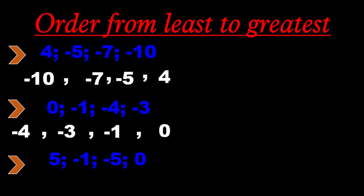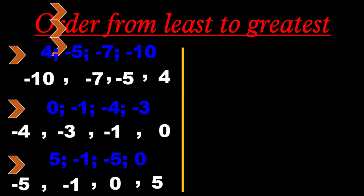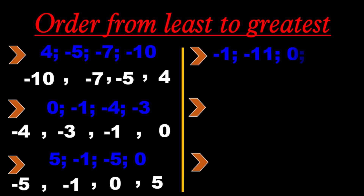Next set: 5, negative 1, negative 5, 0. The smallest is negative 5, followed by negative 1, followed by 0, and the greatest is 5.